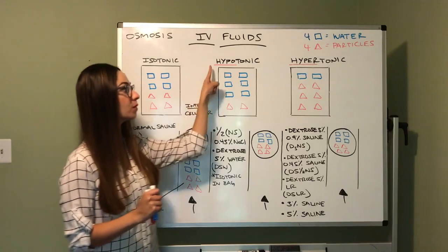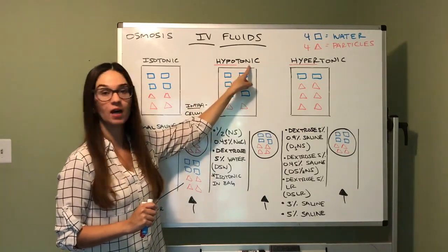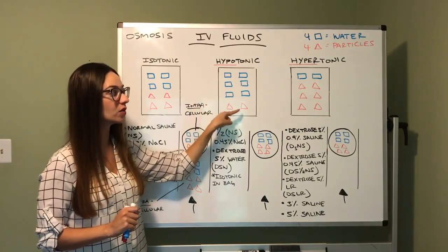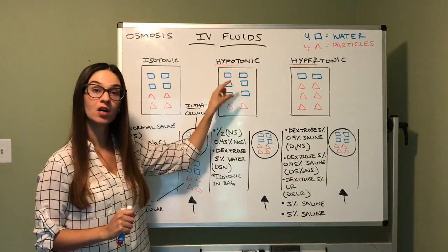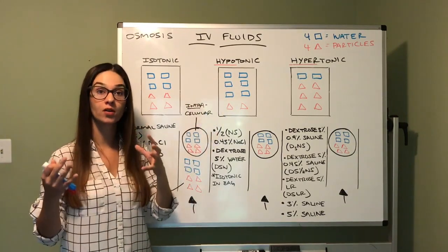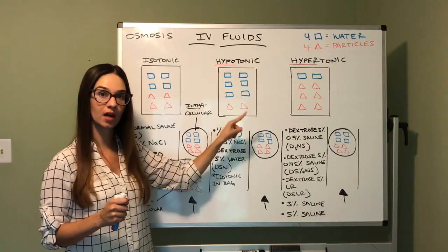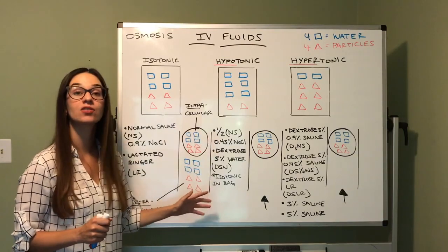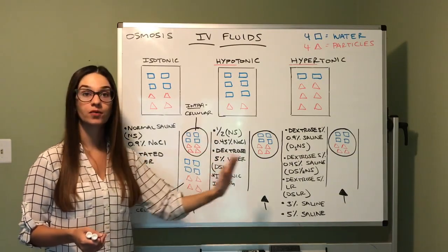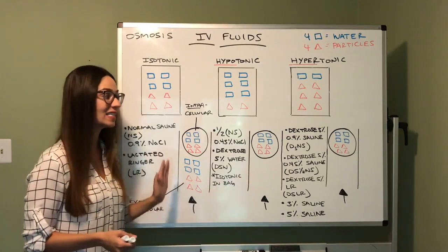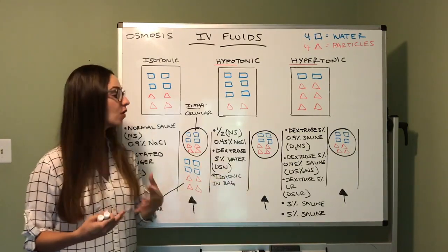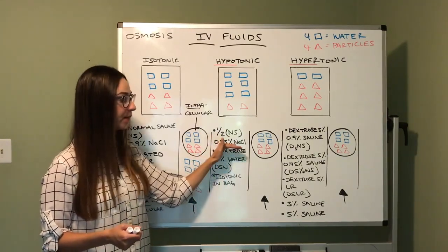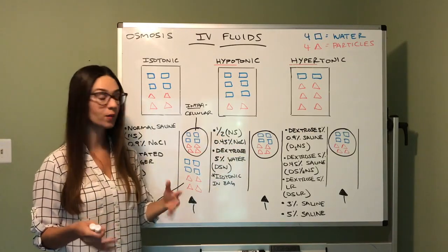Now let's shift to hypotonic solutions. When you think hypo, think less. When you think tonic, think particles. So in a hypotonic IV solution, there are less particles — only two particles to the water. There is more water or fluid than particles. Examples of hypotonic solutions include half normal saline, or 0.45% sodium chloride, and D5W, which is dextrose 5% in water. Your instructor may give you more examples — just add them to your chart.